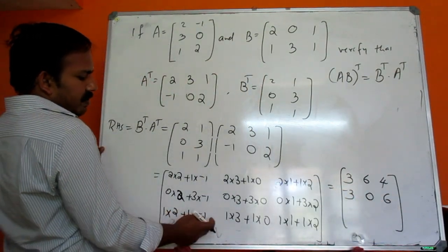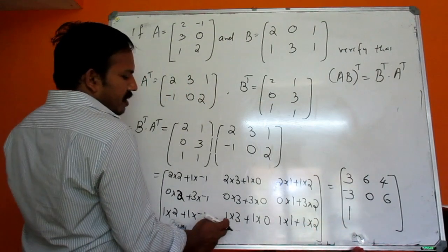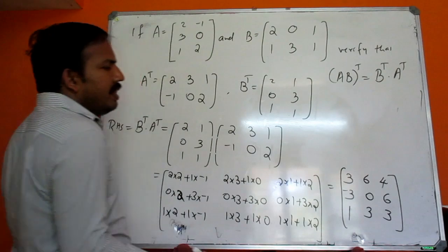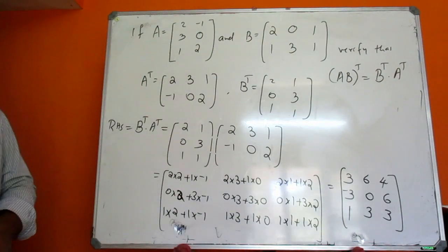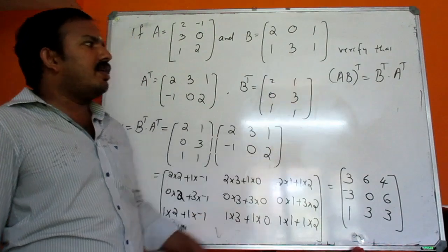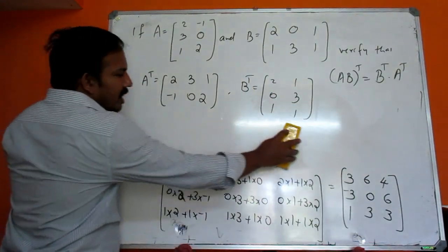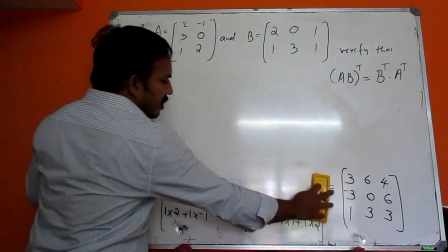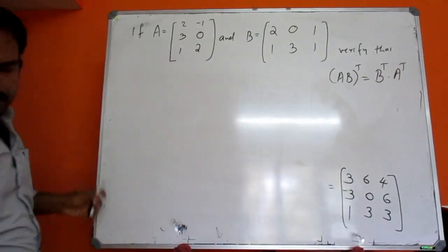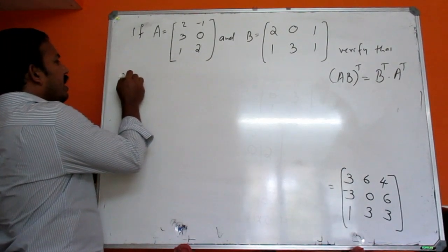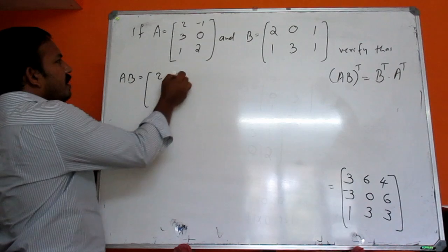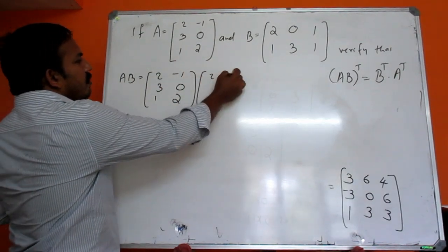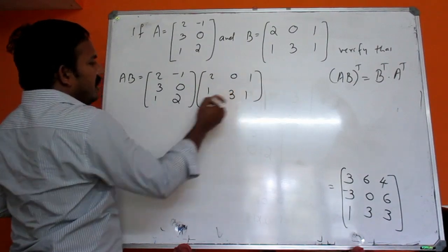Continuing: third row gives 2 minus 1 equals 1, then 3, then 1 plus 2 equals 3. So the matrix AB is obtained. B transpose into A transpose — this row confirms AB transpose.